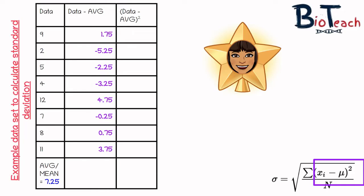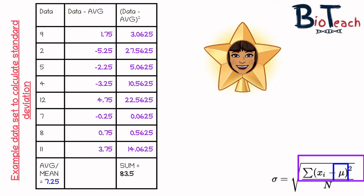Then I do 4 minus 7.25 and I get minus 3.25, and I keep going until I've looked at all of those numbers and I've got a figure in each of those cells. The next step is to square all those numbers that you see in purple.